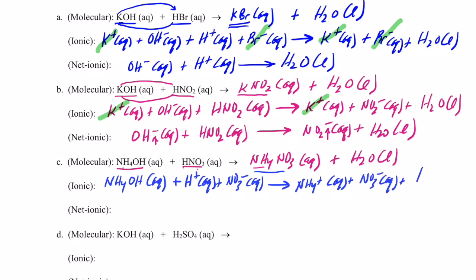Ammonium hydroxide is a weak base, so weak bases will not dissociate or ionize very well in water — I leave that together as NH4OH. My strong acid HNO3 does ionize in water into H+ and NO3-. On the product side, ammonium nitrate is the salt formed and all ammonium compounds are soluble, existing as ammonium ions and nitrate ions in water, and of course water sticks together. Let's cancel the spectator ions — the nitrate cancels on both sides, but that's it.